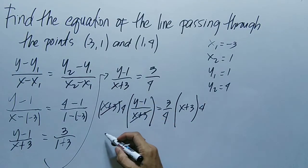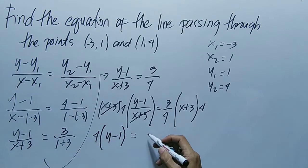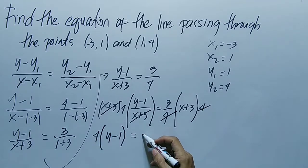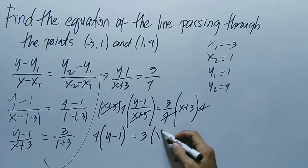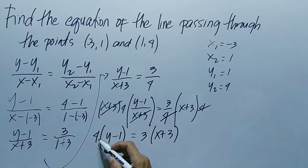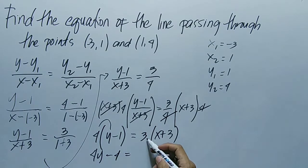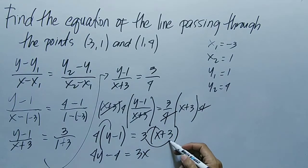Cancel (x + 3) and (x + 3), leaving 4(y - 1) equals cancel the 4, and what remains on the right side is 3(x + 3). So let's simplify further. Apply the distributive property: 4 times y is 4y, then 4 times -1 is -4, equals 3 times x is 3x, then 3 times 3 is positive 9.